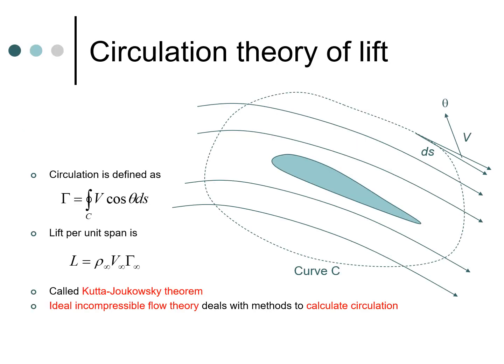Now let us look at the circulation theory of lift. For example, we have an airfoil here and this is placed in flow. If we consider this region around this flow here, in this region we can essentially define a circulation, and this is essentially given by this symbol gamma here.